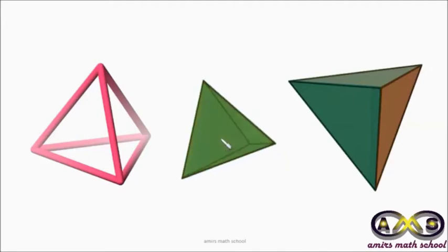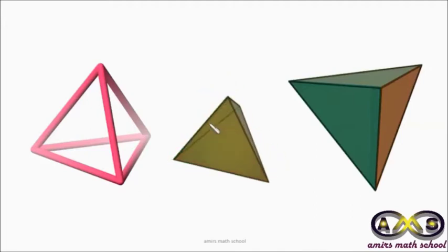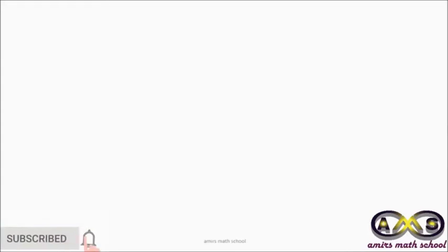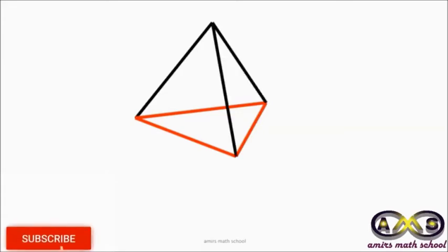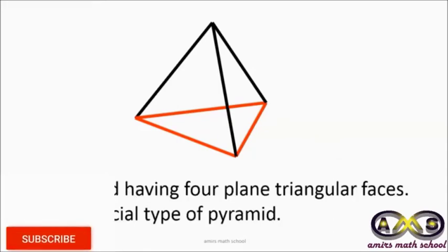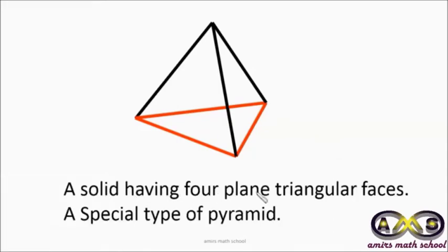A tetrahedron has four faces — one, two, three, and four. The intersecting points of faces form straight lines, and a tetrahedron consists of six such lines which are called edges. Here you can see three red and three black edges of a tetrahedron. A solid having four plane triangular faces is known as a tetrahedron.